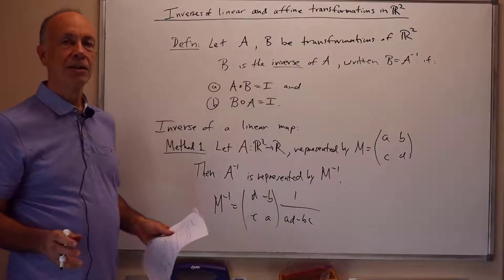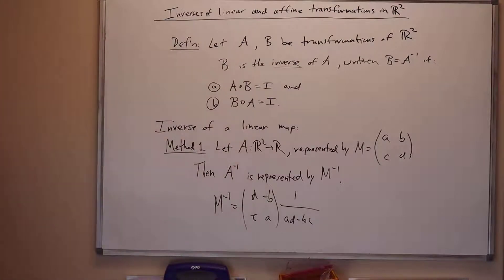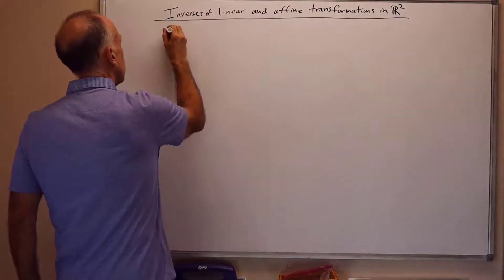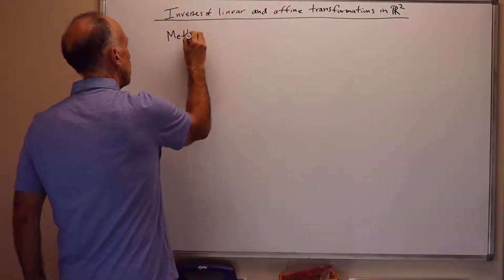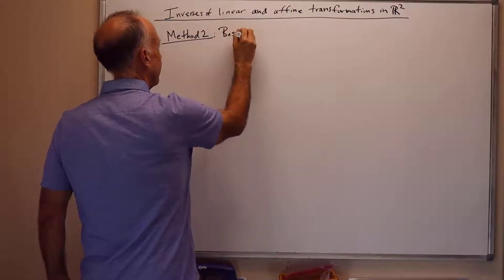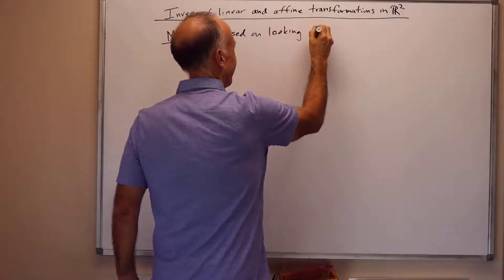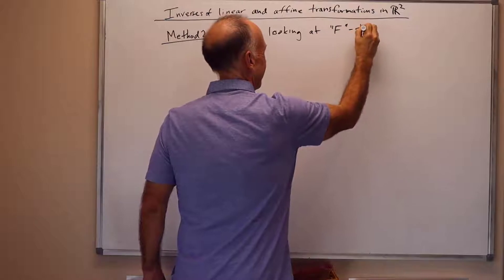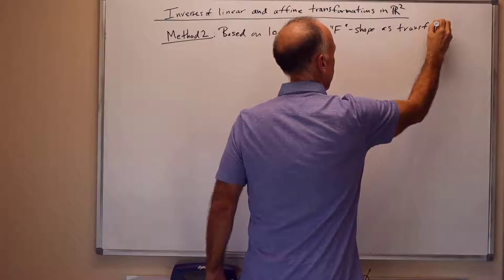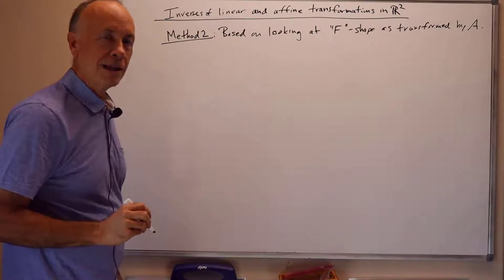For method two, I want to look at the F shapes and get a geometric way of getting the same kind of thing. Method two is based on visualizing at an F shape as transformed by A. This is best illustrated with an example.